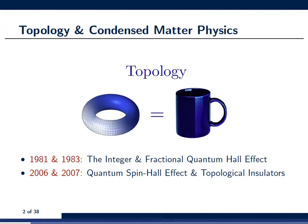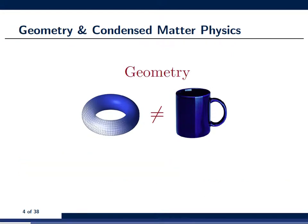This notion of topology is usually illustrated by a donut being equal to a coffee cup. This is understood in the sense that in principle you can take the donut and continuously deform it into a coffee cup without changing the number of holes in it. But in fact, a donut is not equal to a coffee cup — for example, you cannot drink coffee out of a donut — and the difference is in fact in the geometry.